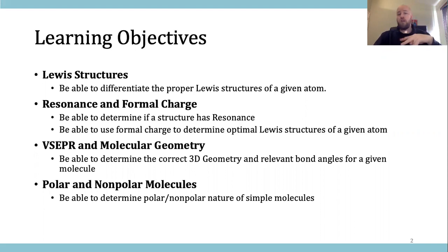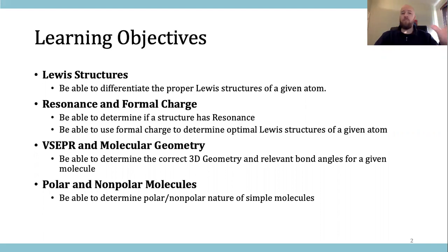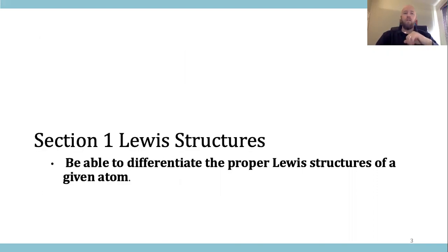Molecular geometry is mostly memorization. We will use the Lewis structure in order to translate into a three-dimensional structure. So the Lewis structure is a 2D, usually linear, diagram, and then we'll translate that into the 3D structures. We can also look at some very basic polarity — we're not going to go too deep into polar molecules; they'll be relatively simple things like binary molecules.